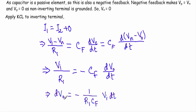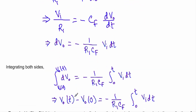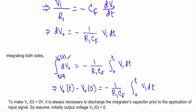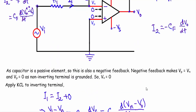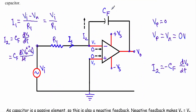To find VO we perform integration on both sides with respect to their integral operators. dVO integrates to VO, and the right side integrates over dt. Integrating from t equals zero to t equals T, we get VO(T) minus VO(0) equals minus 1 divided by R1·CF times the integral from zero to T of VI dt. Before applying any input voltage VI, the capacitor must be discharged so the voltage across it equals zero, meaning VO at t equals zero is zero volts.